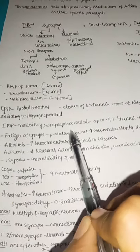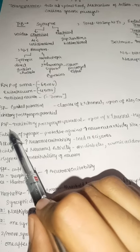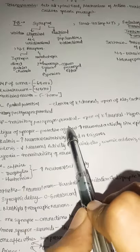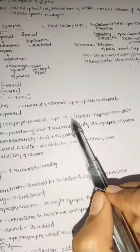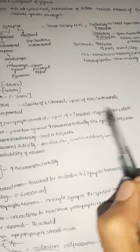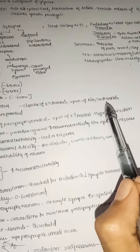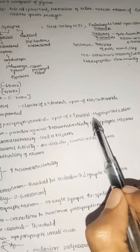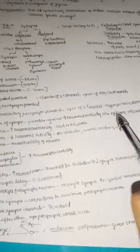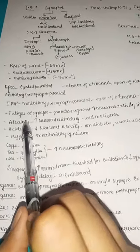IPSP is the inhibitory postsynaptic potential — also a graded potential, not an action potential. Opening of potassium channels leads to hyperpolarization because potassium (positive ions) leaves the cell, increasing intracellular negativity.